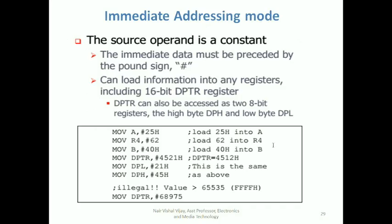What is an immediate addressing mode? Immediate addressing mode is an addressing mode where you send an immediate data to your microcontroller's register. In this mode, the hash symbol is used to send an immediate data such as 25. If you want to write the number 25 — it is a number, not an address location — into a register like the accumulator or any register in the register bank, you use the hash symbol in front of the number. Whenever you represent a number with a hash in front of it, it is an immediate number.